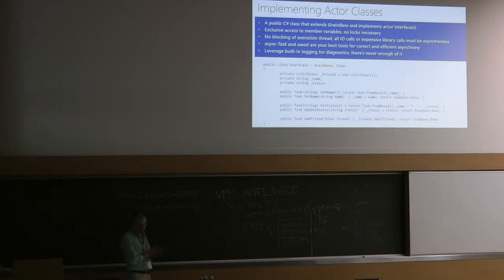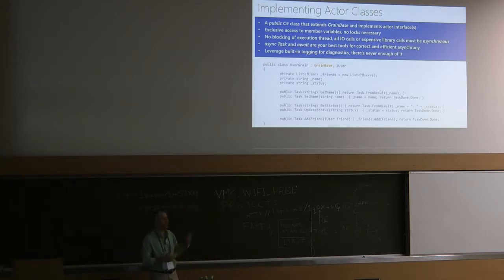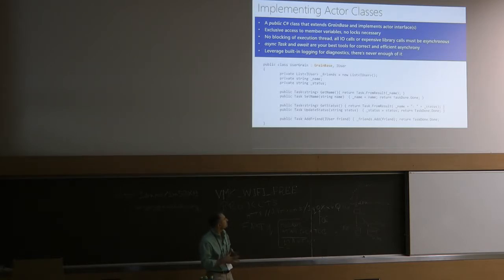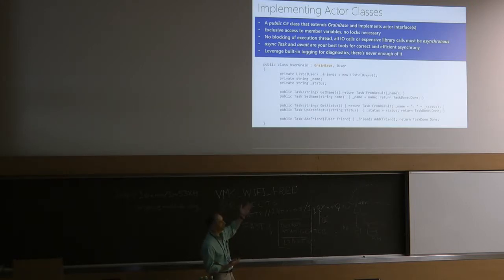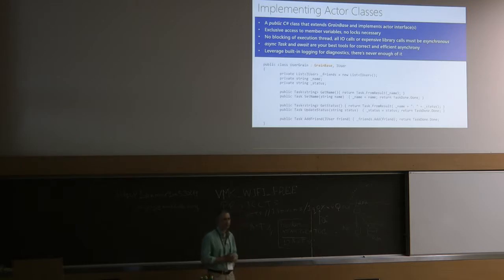Implementation is just implementing the interface with a class that extends GrainBase — the base class for all grain implementations. You can implement several interfaces just like normal object-oriented programming. TPL has a pattern where to return a ready value you use Task.FromResult and pass the value you already have. That's just how TPL works — which is why I was hoping you'd read up on TPL and look at samples. This is the standard TPL way of returning concrete values.